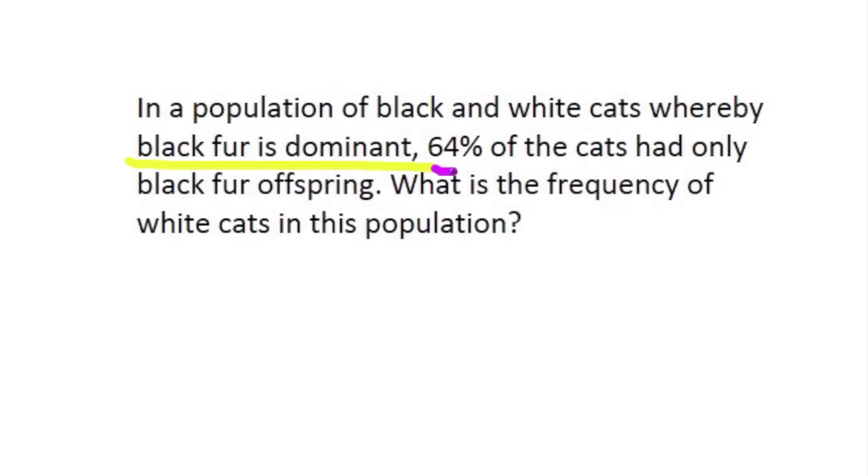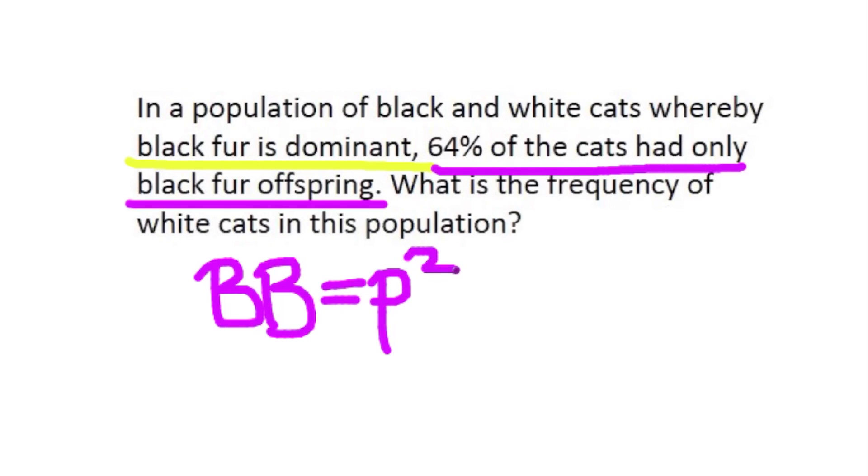Now, 64% of the cats had only black fur offspring. So cats that have only black fur offspring are homozygous dominant cats, which is represented by p². So we could say that p² is equal to 0.64.